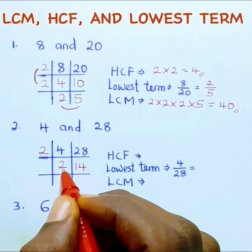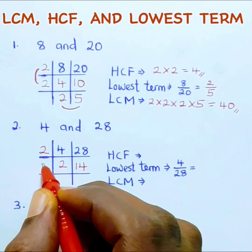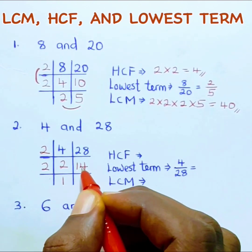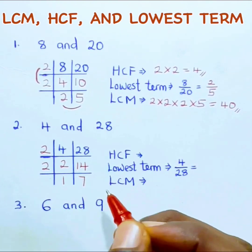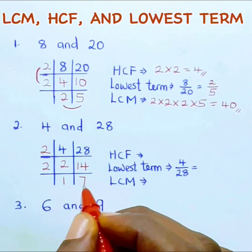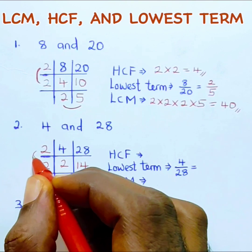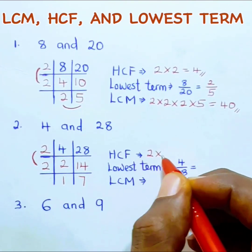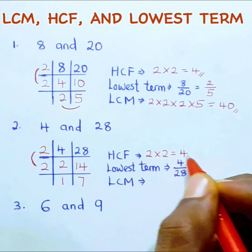The number that can still divide both 2 and 14 is 2. 2 divided by 2 is 1, and 14 divided by 2 is 7. No other number can divide both, so we stop. For the HCF, we multiply the divisors: 2 times 2 equals 4, so our HCF is 4.